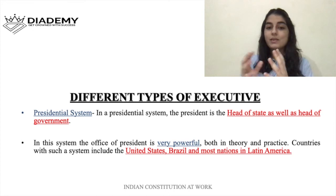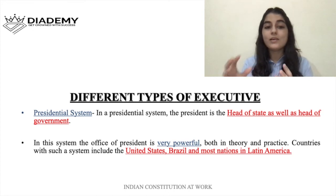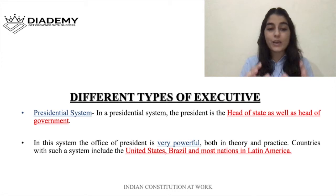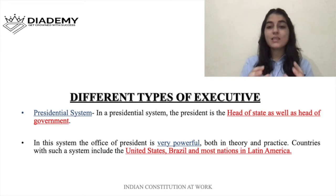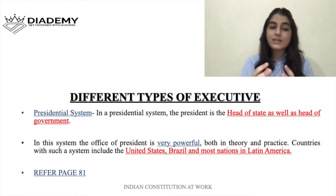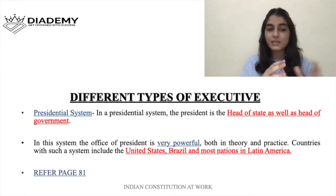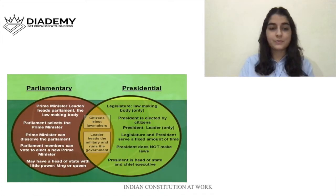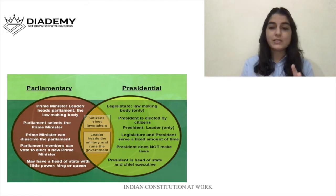Countries like the United States — where currently there is Donald Trump — follow the presidential system, along with Brazil and most nations in Latin America. On page number 81 of the book Indian Constitution at Work, the presidential and parliamentary systems are described in more detail, so refer to that page.